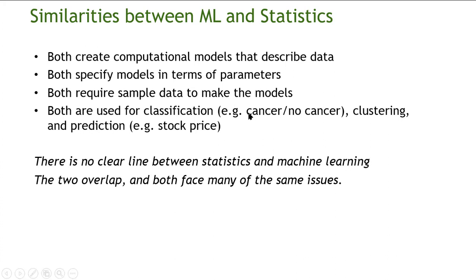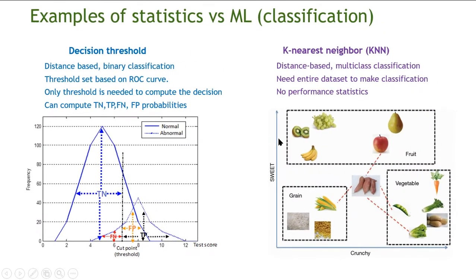An example of a classification problem would be classifying cells into cancerous and non-cancerous based on images. Clustering involves organizing data into different groups. Prediction, for instance, might involve predicting stock prices or oil prices. In fact, there is no clear line between statistics and machine learning — the two overlap and face many of the same issues. Some machine learning methods were developed by statisticians.